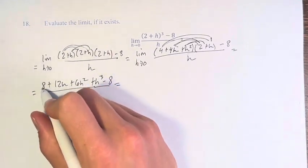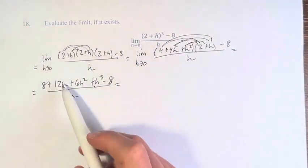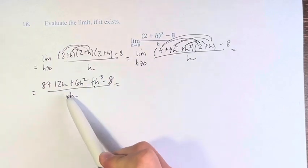8 minus 8 cancels out. We're left with 12h plus 6h² plus h³ divided by h.